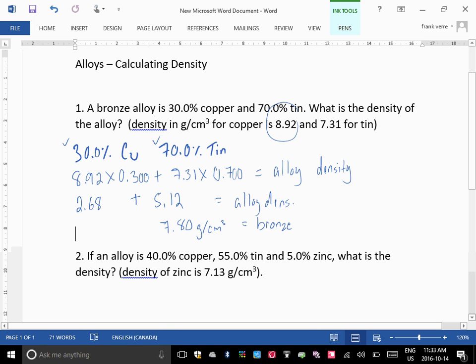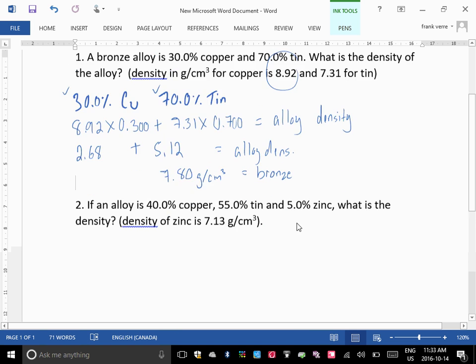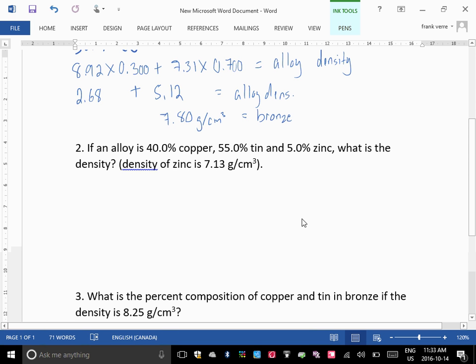And if it's three metals, it's the same thing. So if I have this question here, like, if you have an alloy that is 40% copper, 55% tin, and 5% zinc, what is the density? We do the same thing.